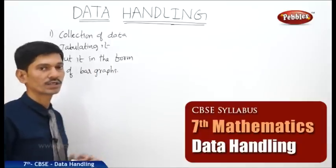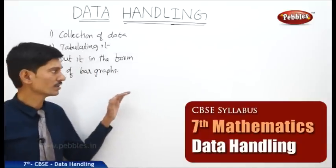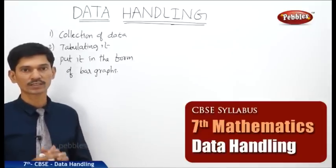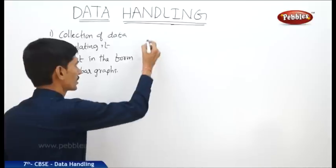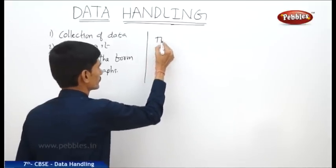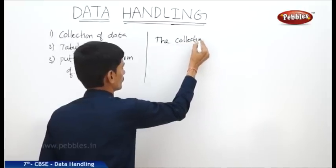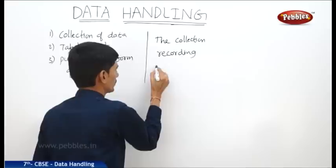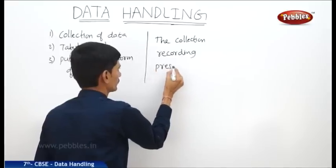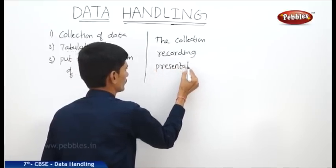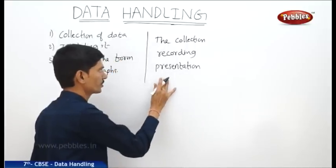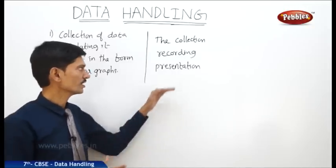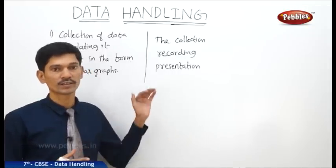Now first, what is Data? Data means it is the information which is collected for any purpose. The information collected is called the data. Now the collection, recording, and presentation of any data helps us organize the experiences and draw inferences from them.